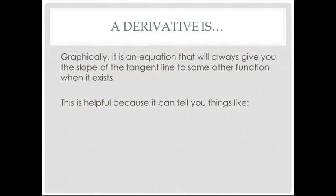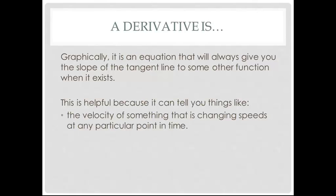If you graph that, the slope of that graph would basically tell you your instantaneous velocity at a particular point in time. So you can find the velocity of things that are changing speeds — technically there's a difference between velocity and speed, but we'll ignore that for now. You can find the instantaneous velocity by knowing the slope of the graph of your distance versus time at any particular point in time.